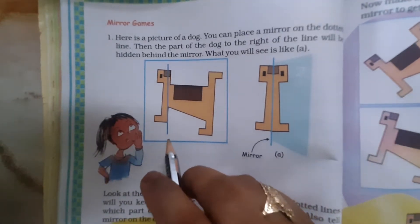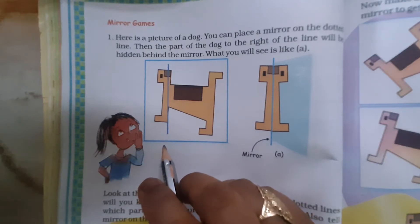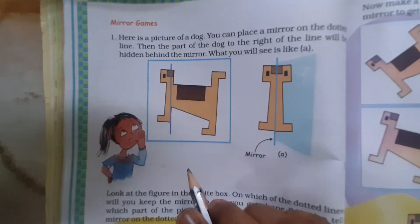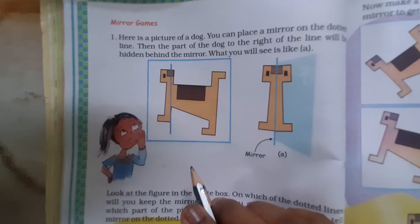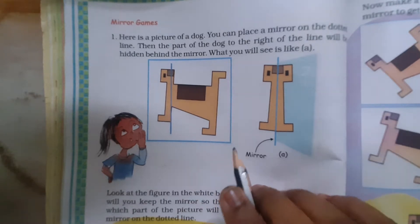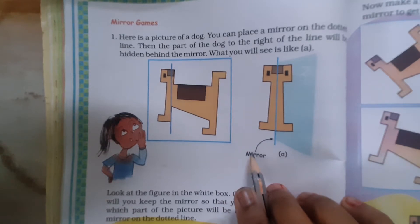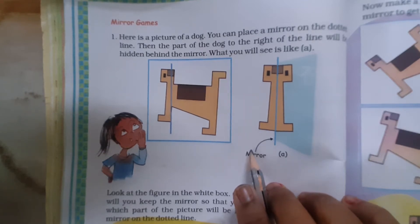Good morning students. We are going to play a game. The name of this game is Mirror Games. I have taught you this chapter — Class 5, Math Chapter 5. This topic is taught in Part 3 of this chapter, but we have to do the activity practically. So let's solve this activity.